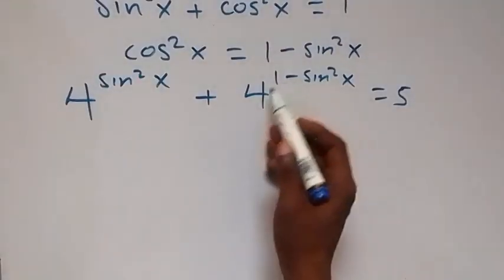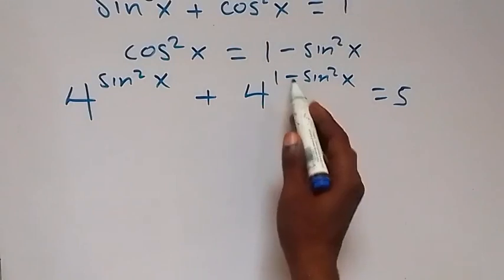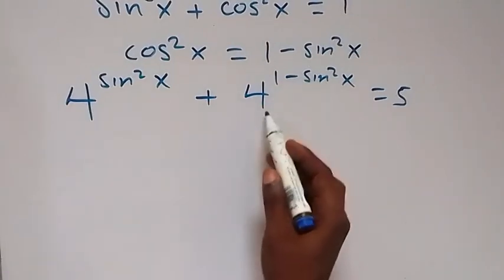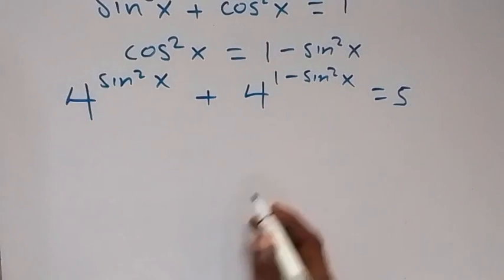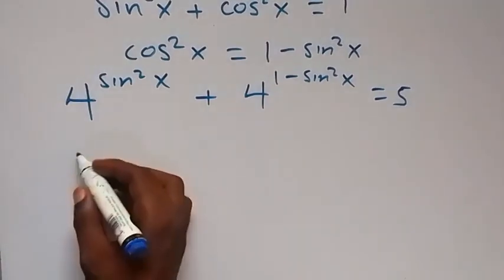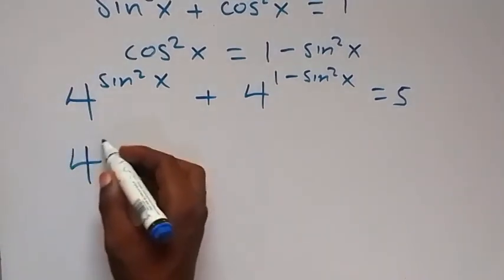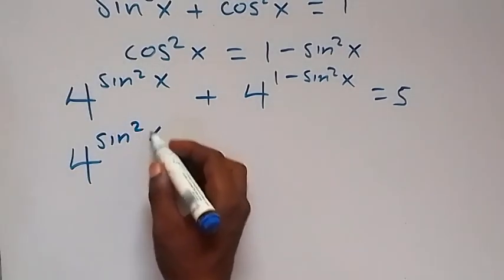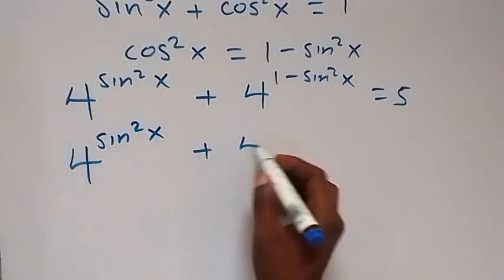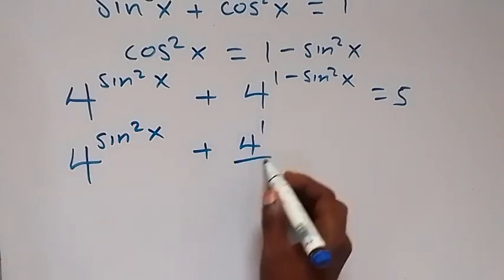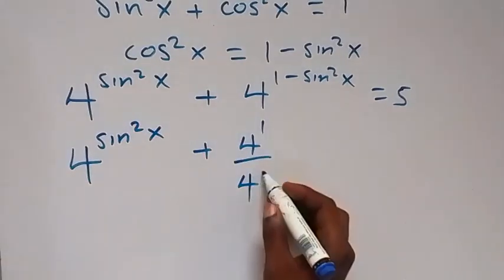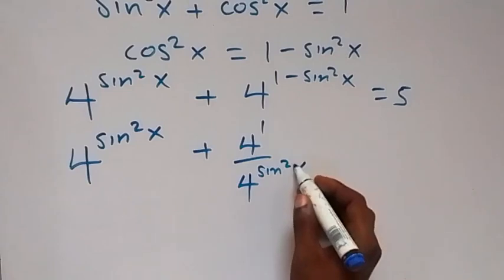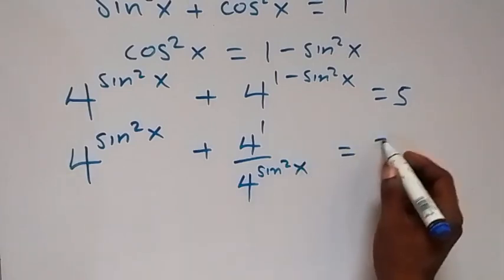Applying the law of indices here: when we subtract the power, it means we have the same base dividing each other. So we have 4 raised to sine squared x plus 4 raised to power 1 divided by 4 raised to power sine squared x, which equals 5.